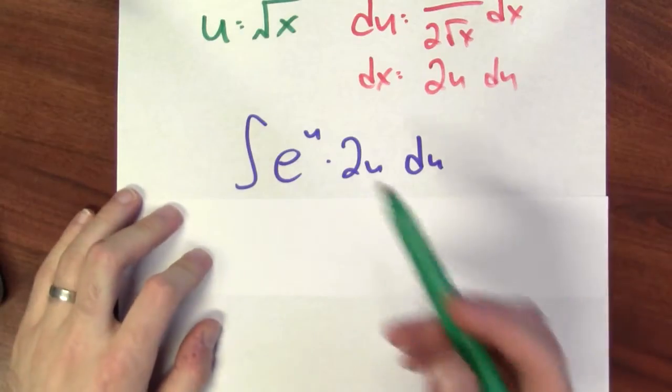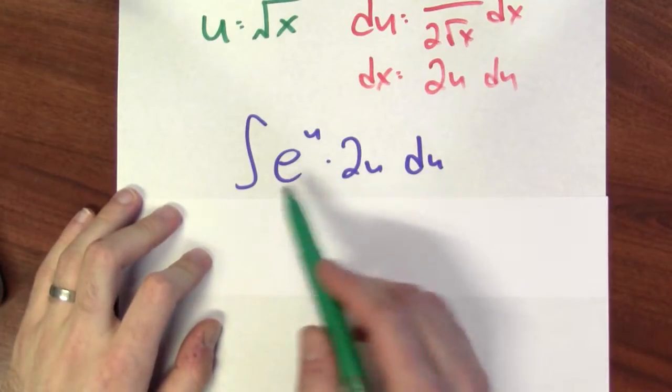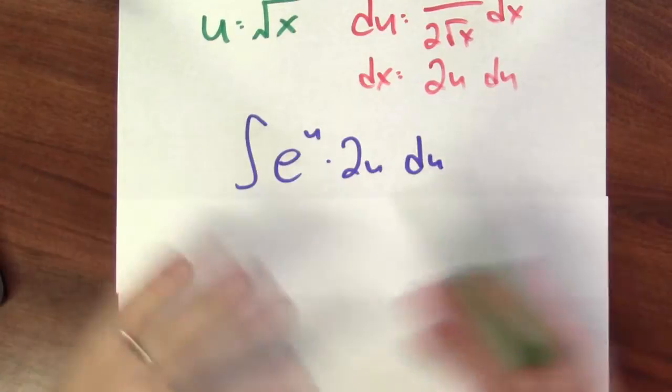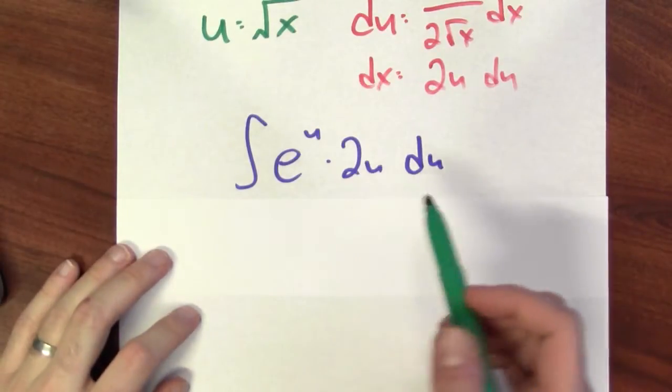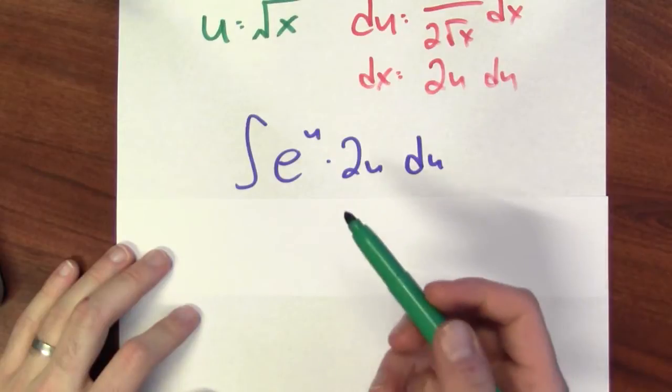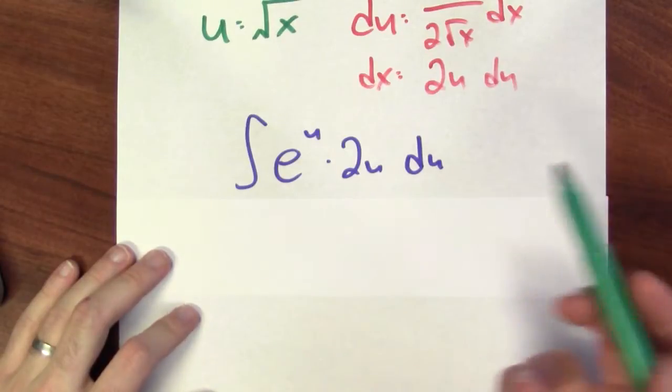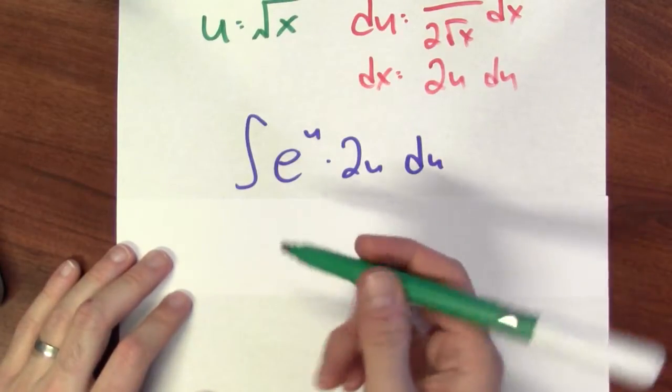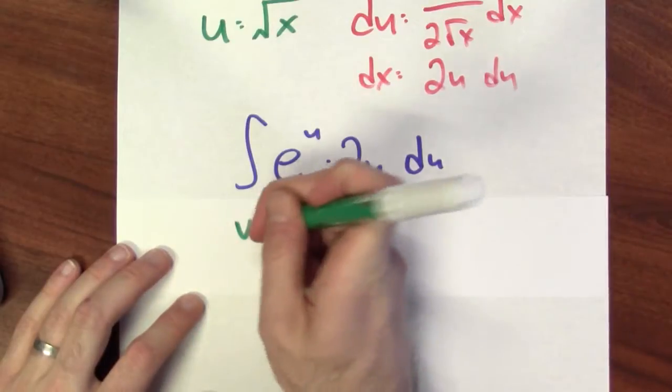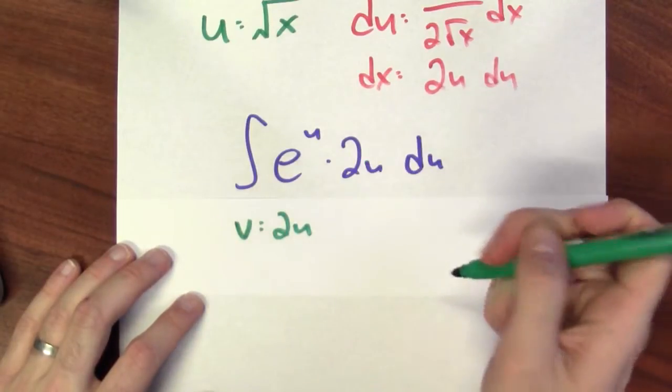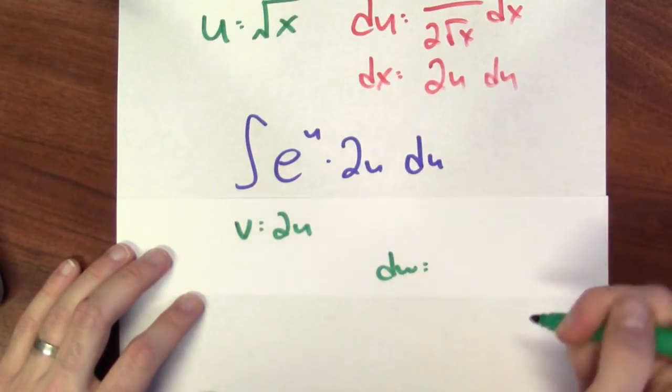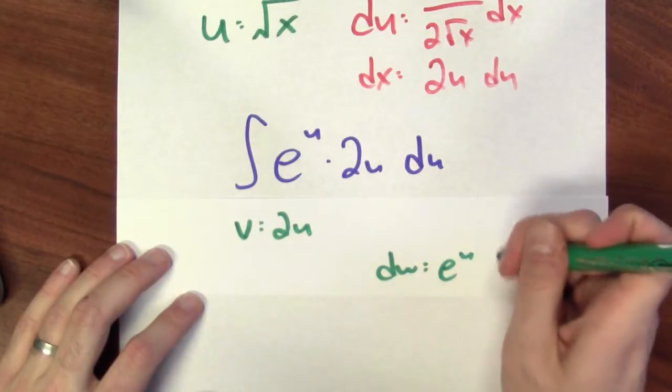But if I'm going to use parts, I probably wanted to call them u and v, right? But I'll just change the names. Instead of talking about u and dv, I'll talk about v and dw. In this problem, I'll have v be 2u, and dw will be e to the u du.